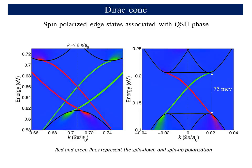For the tin selenide case, at the projection of the M-bar points pair, we obtained two Dirac crossings of the edge states. As one can see, the spin polarizations in the two branches are opposite. Similar results were obtained for the tin telluride film at the point Kx equals zero, which is the gamma-bar projection. Here, we also obtained a clear Dirac cone with opposite spin-polarized branches.